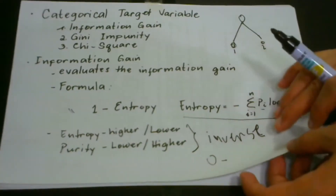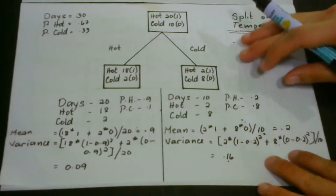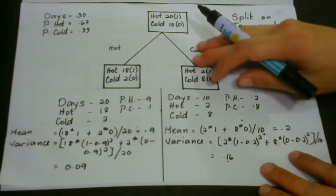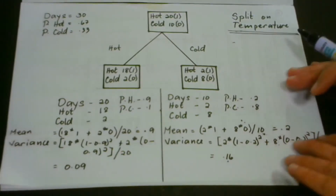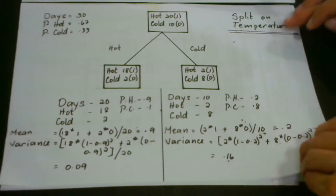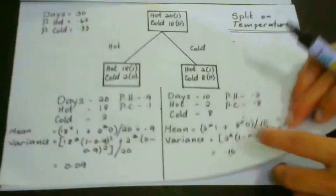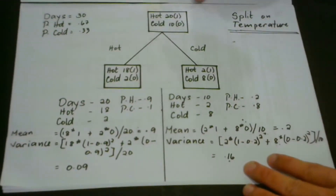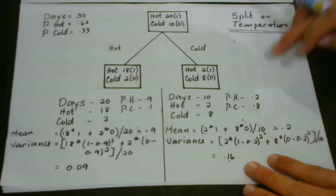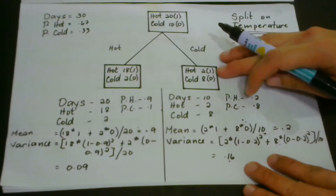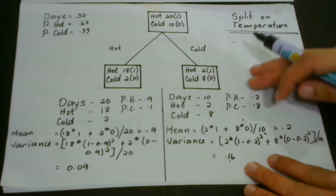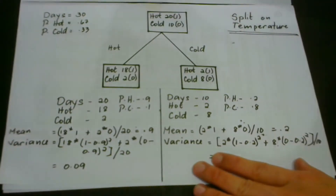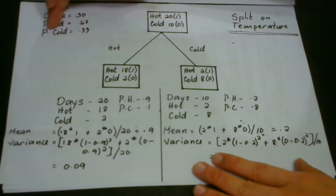For better understanding, we're going to use the same problem as in our lesson about reduction in variance. We're going to identify what kind of weather condition we will have based on two features: temperature and humidity. We will identify which between temperature and humidity can give us the lower entropy so it can be used for splitting. We are considering 30 days; the probability of hot days is 0.67 and the probability of cold is 0.33.